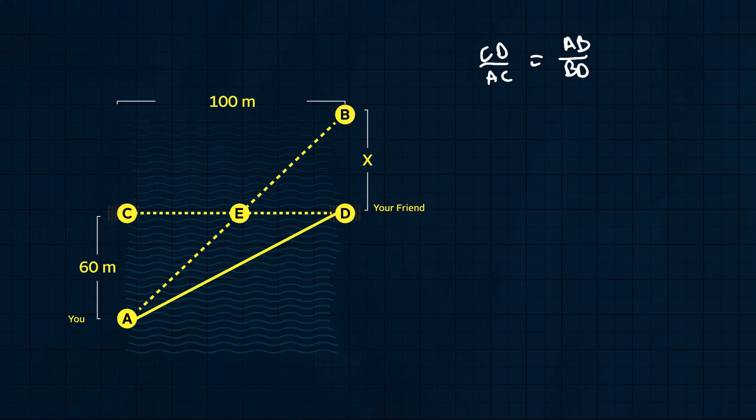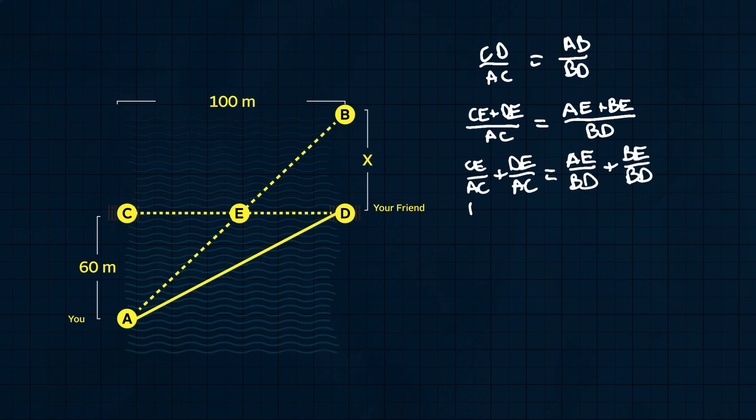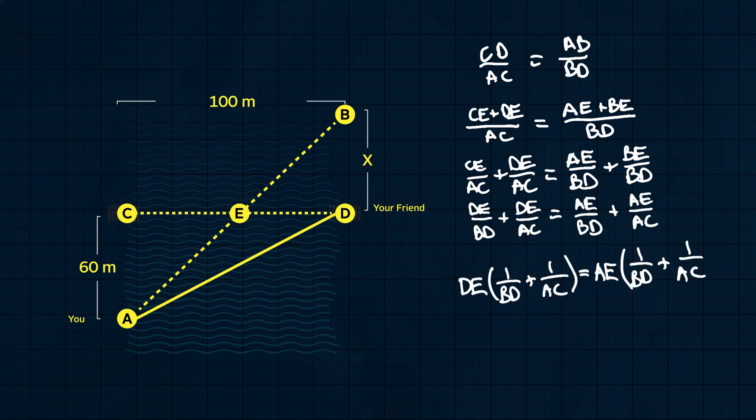Breaking up the numerators into the two sub-segments, we get CE plus DE over AC equals AE plus BE over BD. Now we can substitute the previous equalities and factor out a like term on both sides to get DE equals AE.